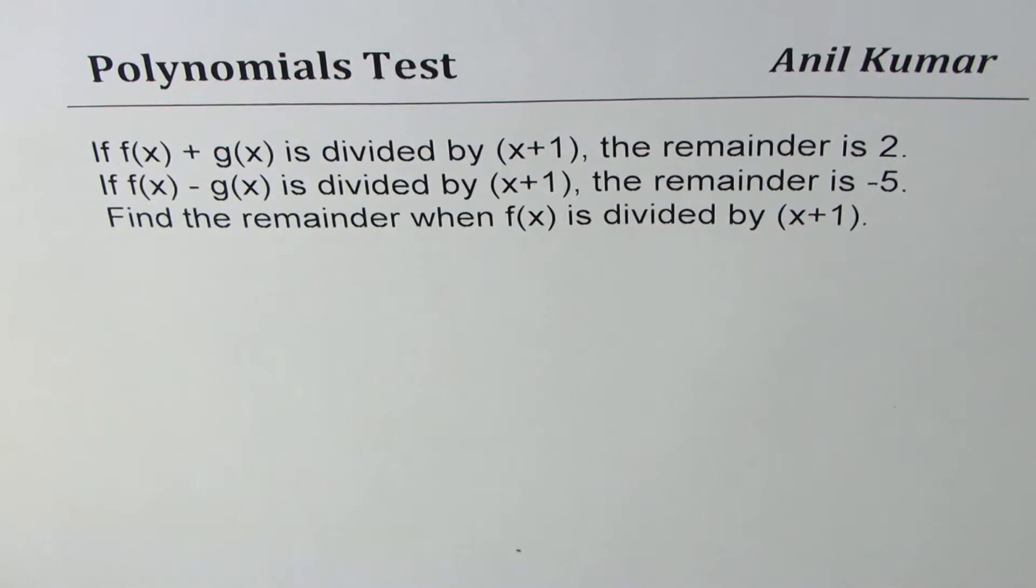If f(x) minus g(x) is divided by x plus 1, the remainder is minus 5. Find the remainder when f(x) is divided by x plus 1.